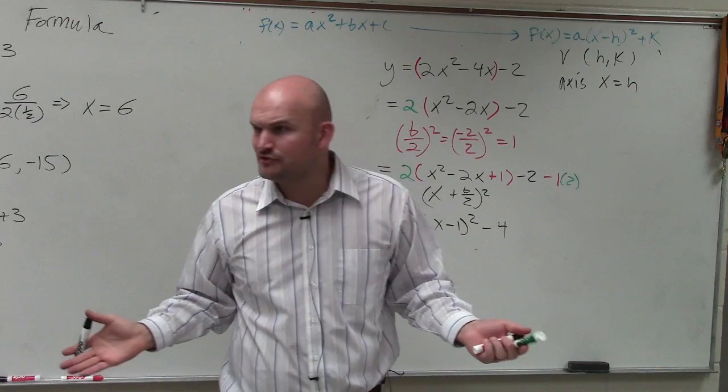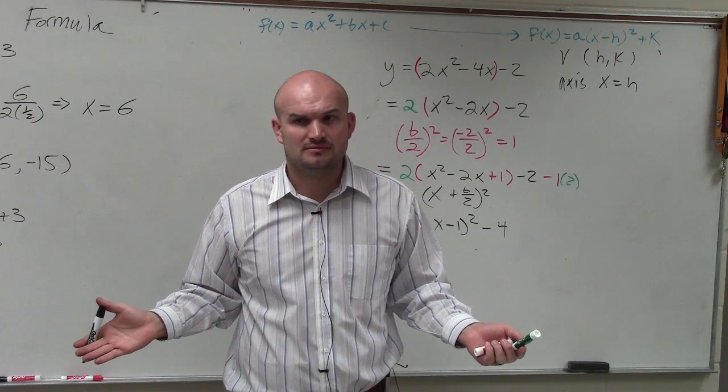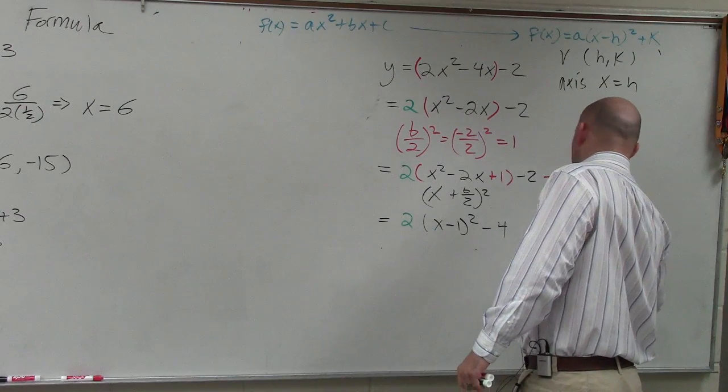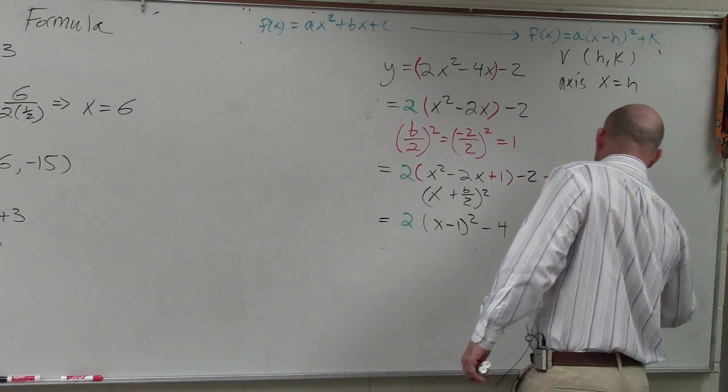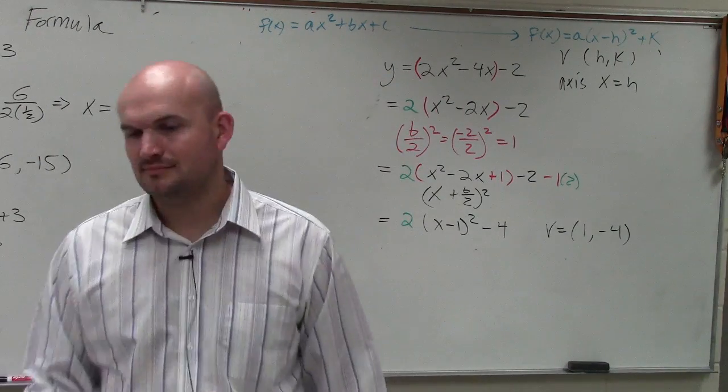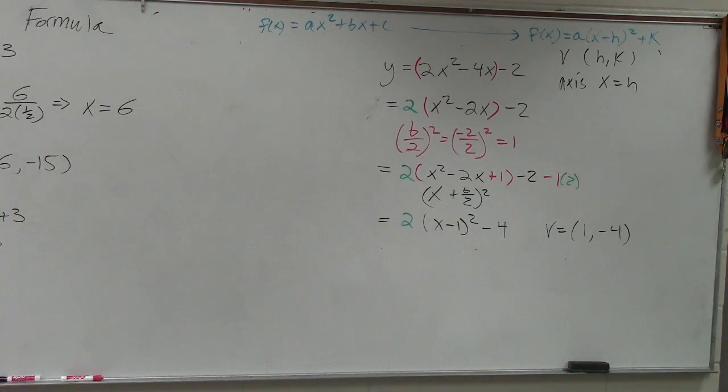And I believe for number 2, they're only asking you, what is the vertex, right? Isn't that all they asked? So the vertex in this case is 1 comma negative 4. But question number 2 is done. Isn't that cool? That was amazing, Mr. McLovin.